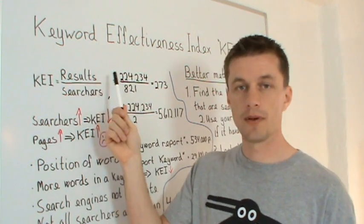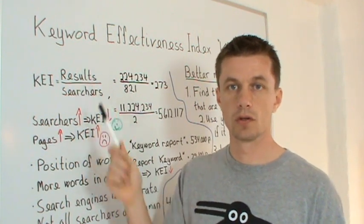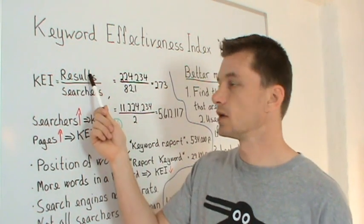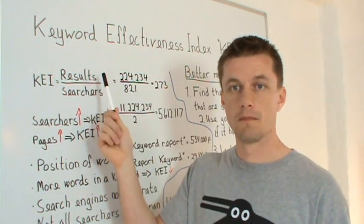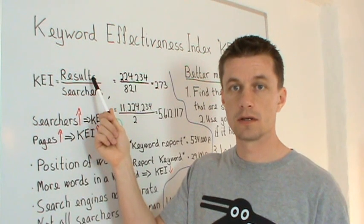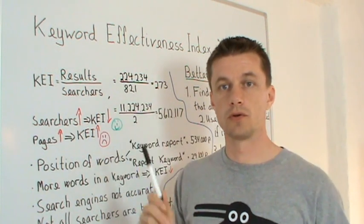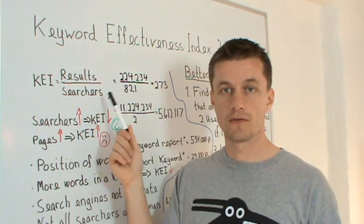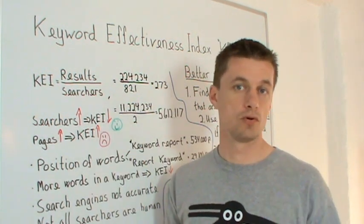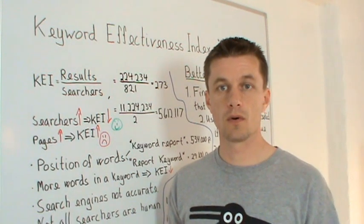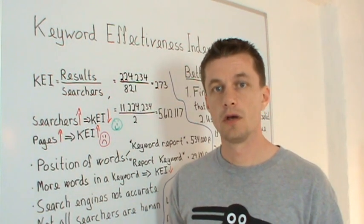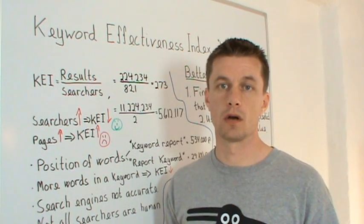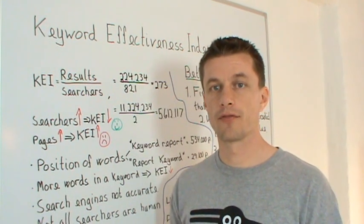Usually you find the number of pages like if you search in Google it says number of results. To get a more accurate number you put it in quotes when you search. The number of searches you can find in many different ways. You can use for example Adwords free keyword tool where it will get an estimation either in your local market or globally of the amount of monthly searches.